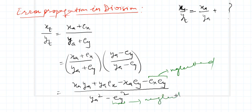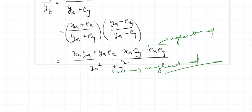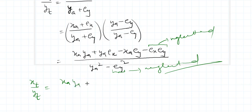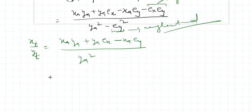When we neglect those small terms, x_t over y_t simplifies. Dividing through by y_a², it becomes x_a over y_a, and the error term reduces to (e_x over x_a) minus (e_y over y_a). So this is the error in division that propagates in our calculations — it is the relative error in x minus the relative error in y.